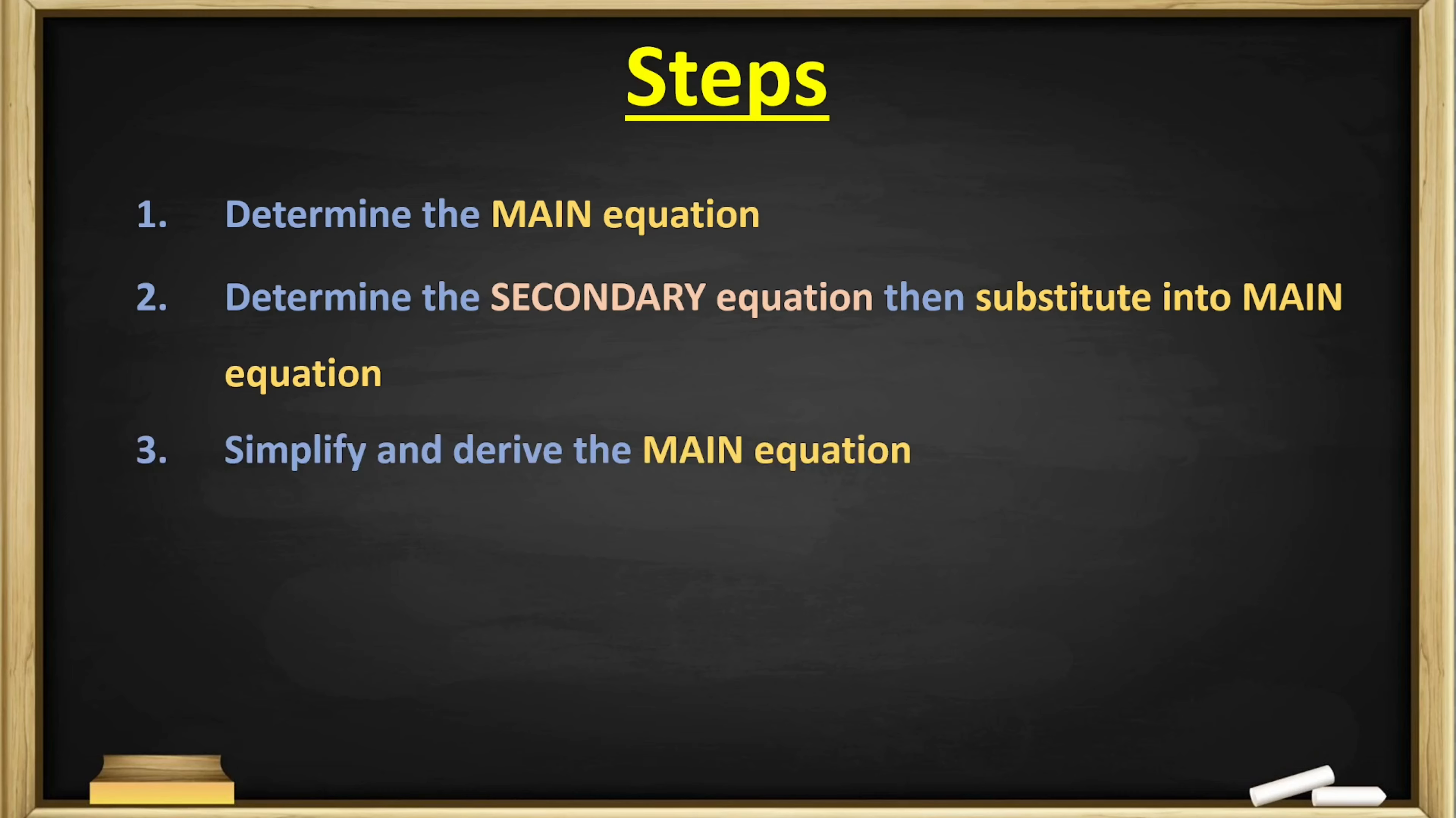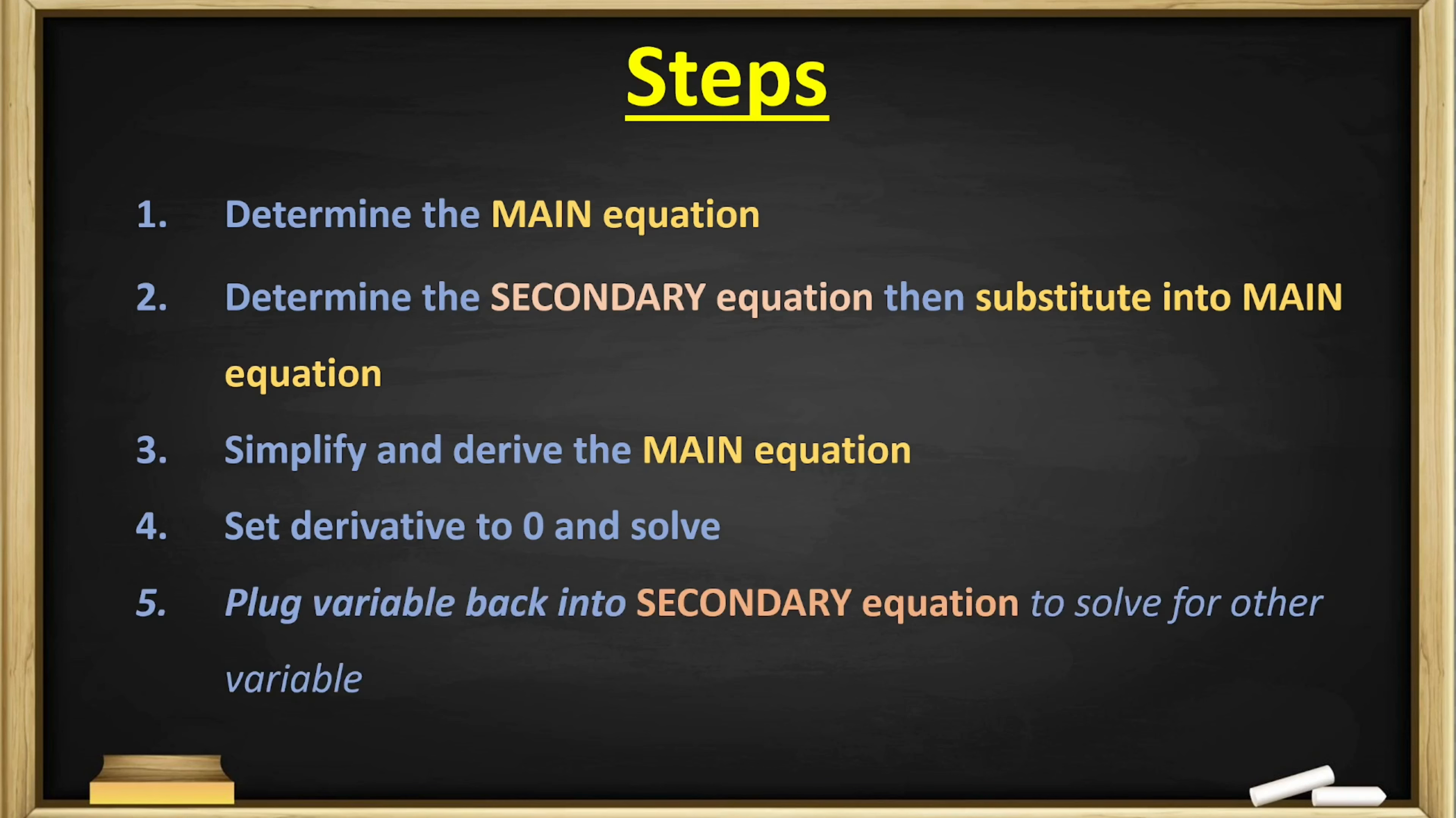Once we've substituted the secondary equation into the main equation, the next step would be to simplify and derive the main equation. After which, we set the derivative to zero and solve for the variable. And finally, we can plug the variable back into the secondary equation to solve for the other variable.